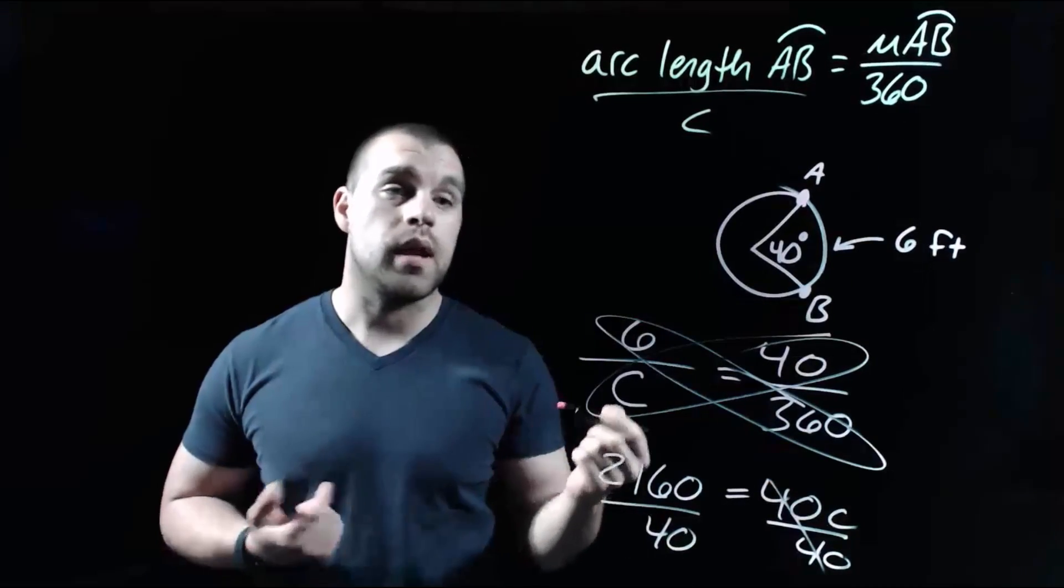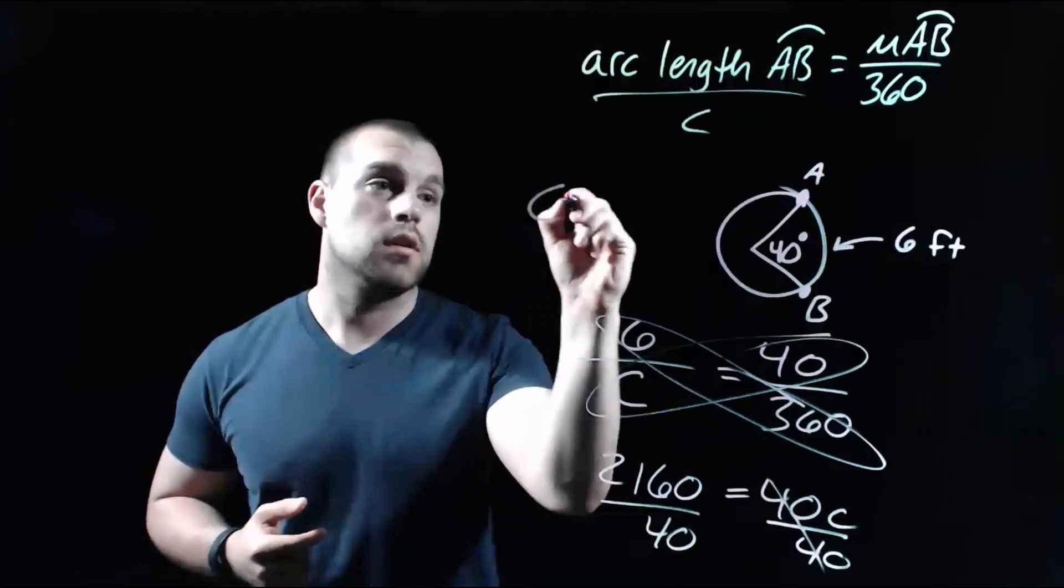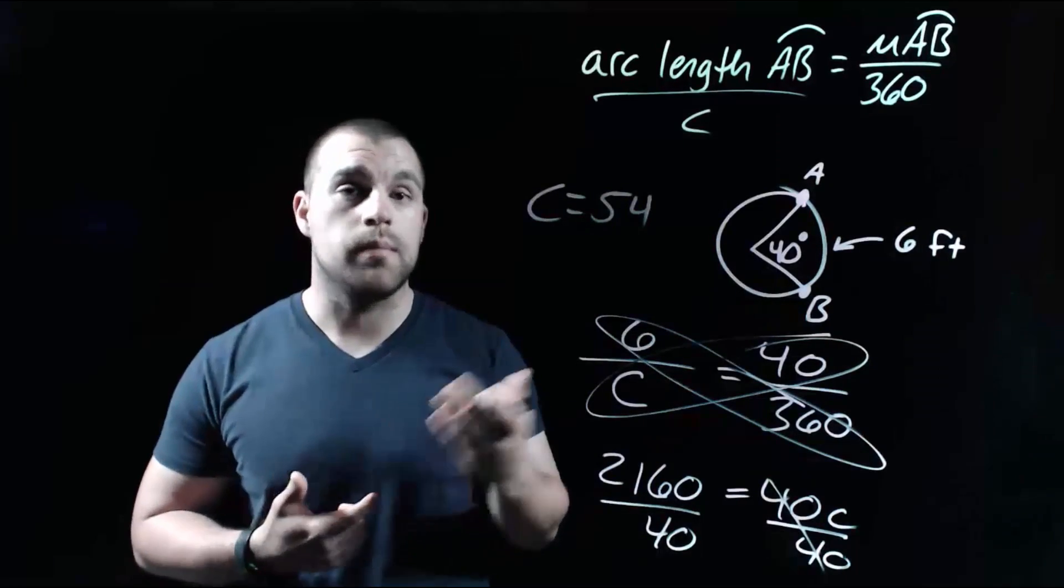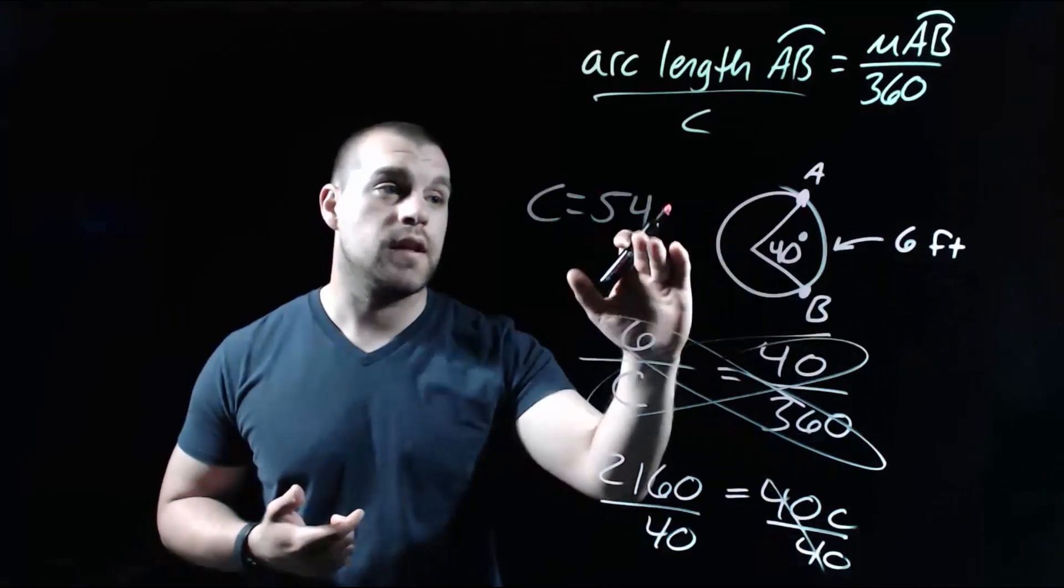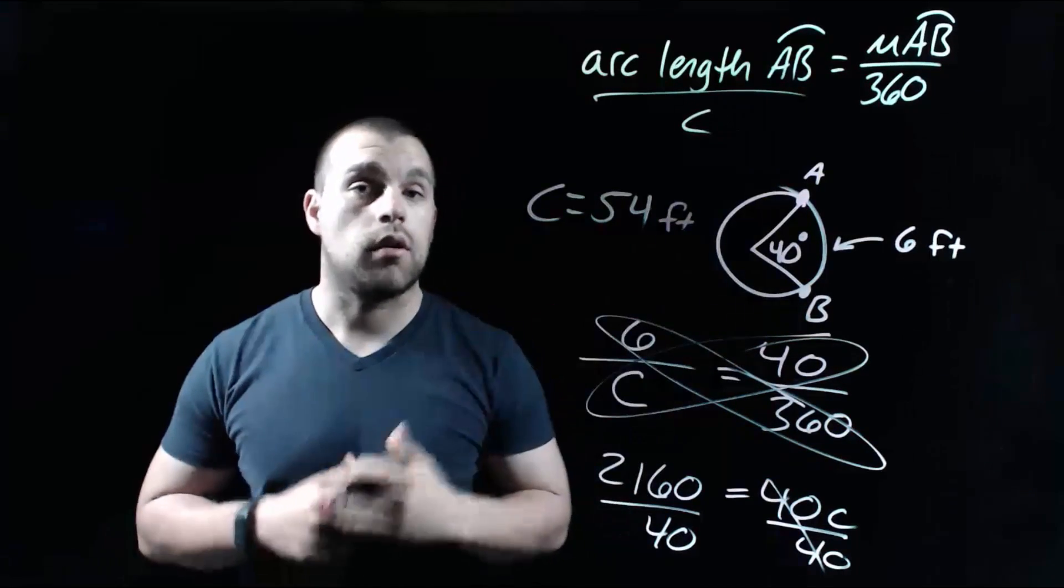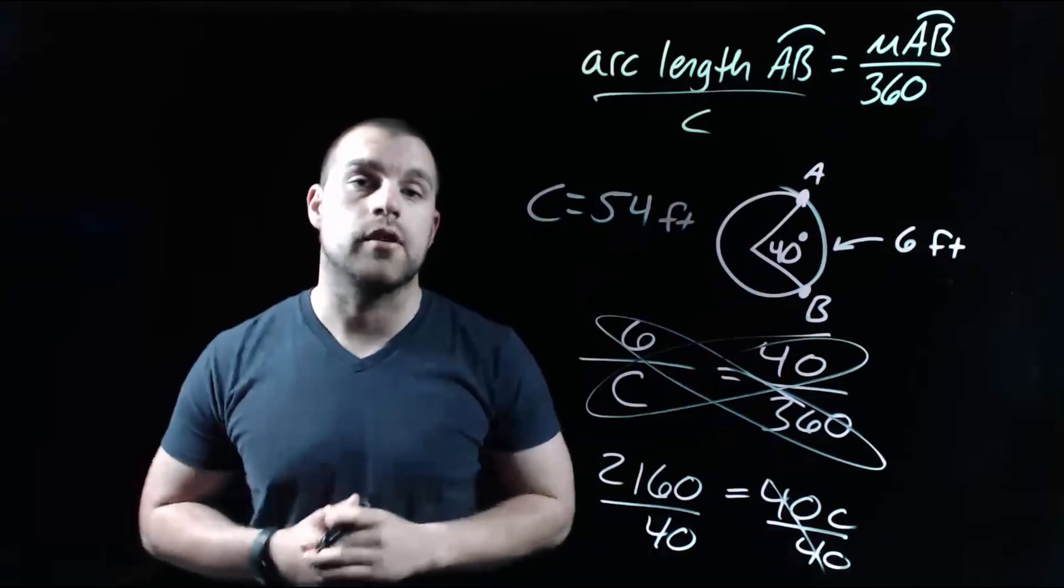And when we do that, we end up with a circumference of 54. Now, we should throw a label on this as well because we're measuring a distance. Our arc length was given to us in feet. So this entire circumference is in feet. So our circle has a 54 foot circumference.